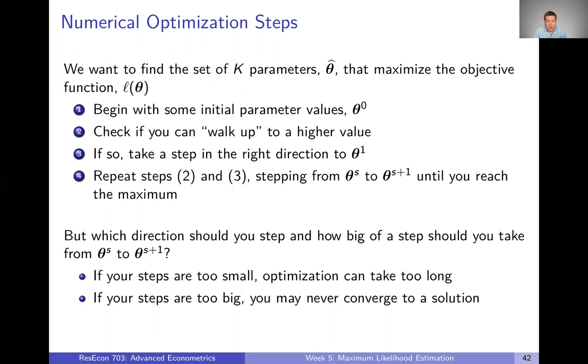Start from those parameter values and check if you can walk up to a higher value of your objective function. Can you move those parameters around in a way that's going to make your objective function get larger? And if so, then take a step in that right direction to some new parameters called theta one. And then keep repeating steps two and three over and over again, stepping from theta s to theta s plus one until you reach the maximum. That's the basic idea.